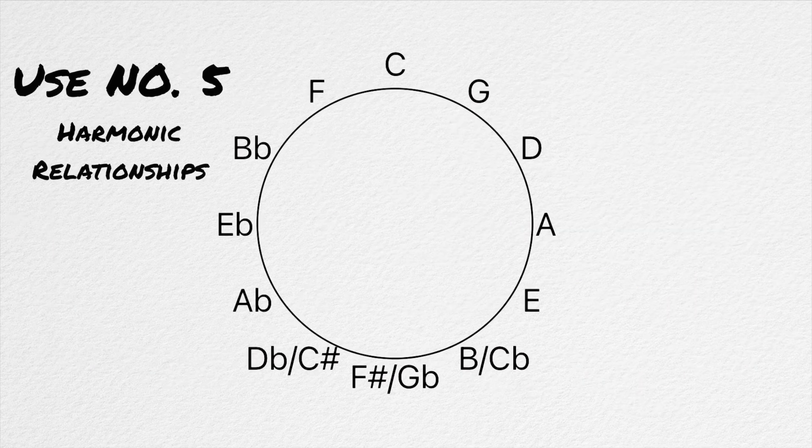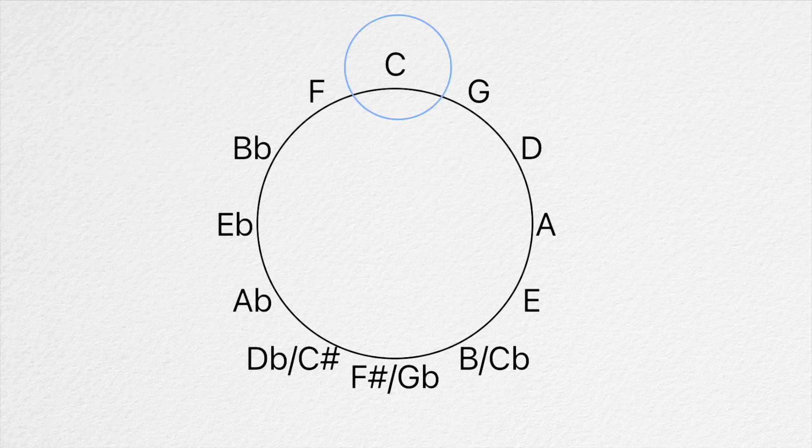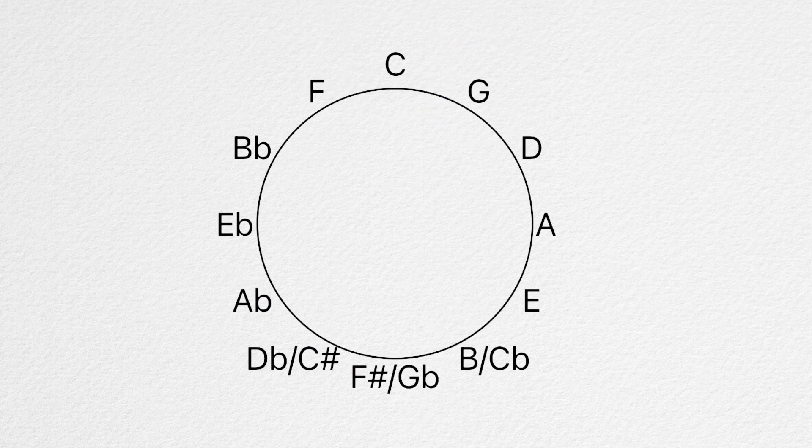Harmonic ideas can also be generated from the circle with ease. The circle shows us how each chord relates to each other. Chords that are close together on the circle are the ones that fit together best. Larger jumps are more jarring to the ears.